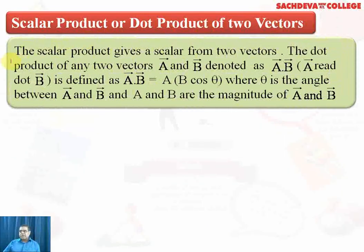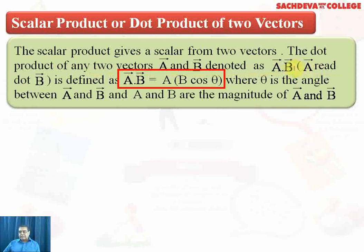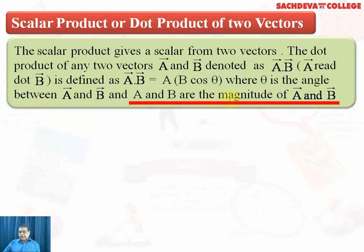The scalar product gives a scalar from two vectors. The dot product of any two vectors A and B, denoted as vector A dot vector B, is defined as A dot B, and that can be written as A into B cos theta, where A is the magnitude of vector A and B is the magnitude of vector B. Theta is the angle between the two vectors A and B, and simply A and B without the arrows are the magnitudes of vector A and vector B.